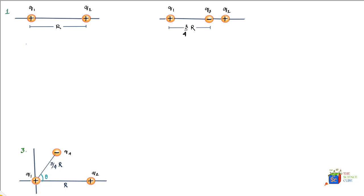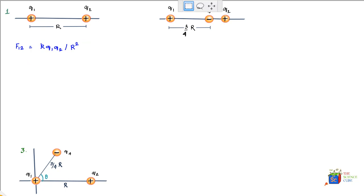For problem one, the force on charge 1 due to 2 — we'll use the notation where we put the number of the charge on which the force has to be found as the first number. The force on 1 due to 2 can be written using Coulomb's law: k times q1 times q2 divided by the distance between the two squared.